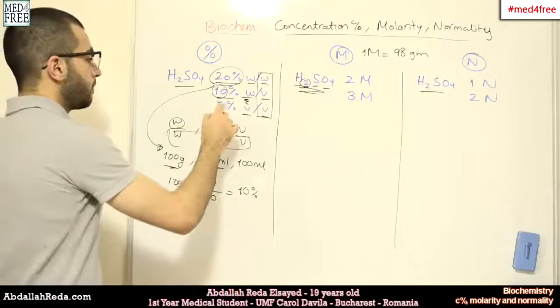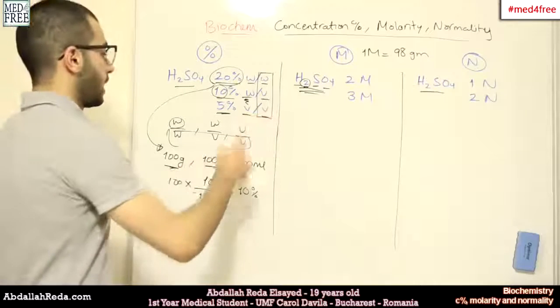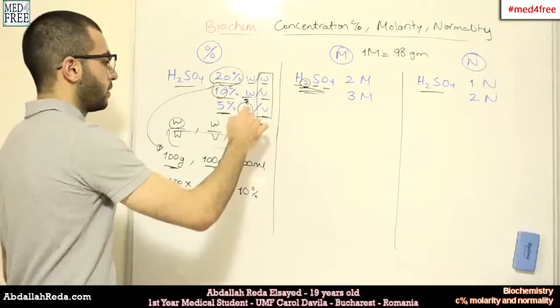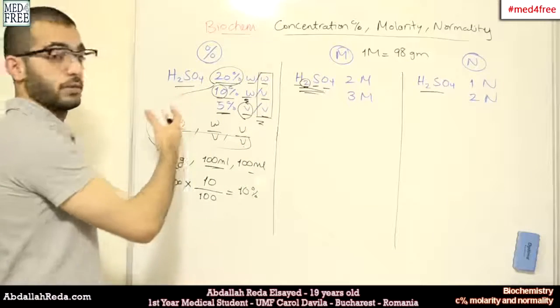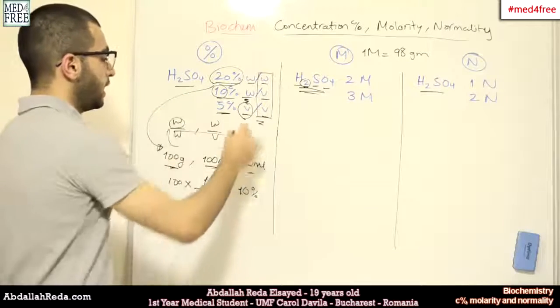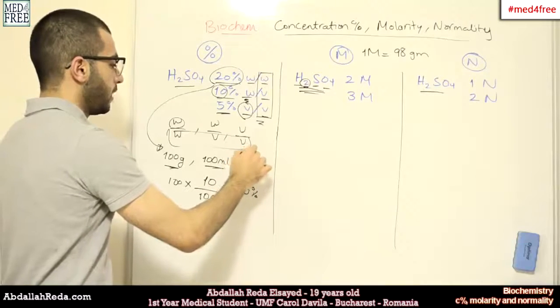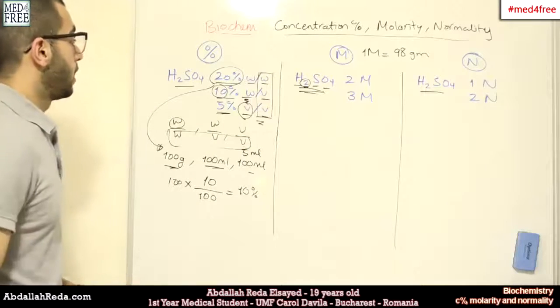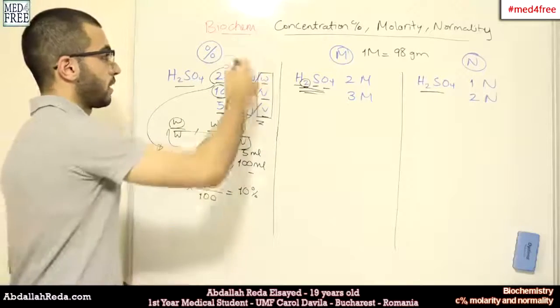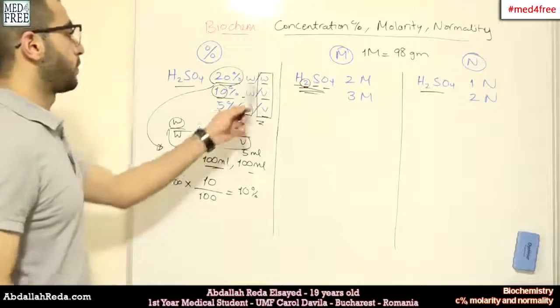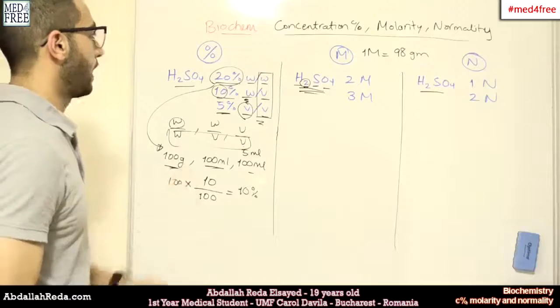And finally, the 5% volume per volume. This means that 5% of the volume of the 100 milliliters is actually occupied by the sulfuric acid. And this means that in each 100 milliliters, there are 5 milliliters of sulfuric acid. So, these are the methods of expressing the concentration percentage: weight per weight, weight per volume, and volume per volume.